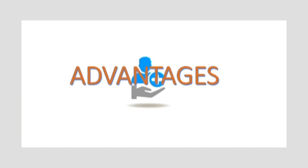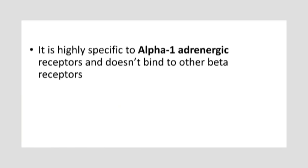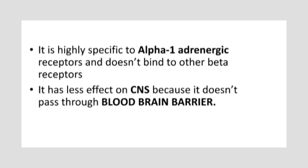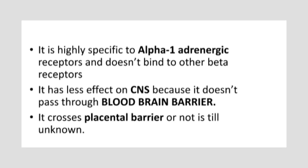Talking about the advantages of midodrine and why it is preferred over other sympathomimetic agents: it is highly specific to alpha-1 adrenergic receptors and doesn't have affinity with other receptors, unlike other sympathomimetic agents that also have affinity for beta receptors. It has a minimized effect on the CNS because it doesn't pass through the blood-brain barrier. Whether it crosses the placental barrier is still unknown, so it is better not to give it in pregnancy as a precaution. Lastly, an interesting clinical fact: midodrine should not be given after 6 p.m. because it will cause supine hypertension.